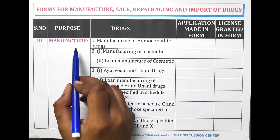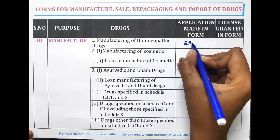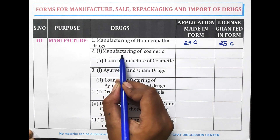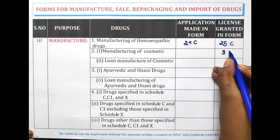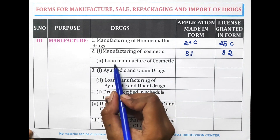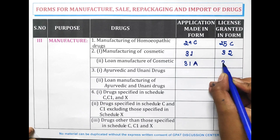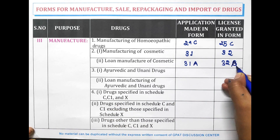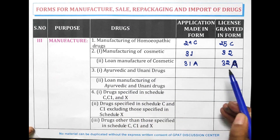For manufacturing, for homeopathic drugs the application is made in Form 24C and the license is granted in Form 25C. For manufacturing of cosmetics, the license is granted in Form 32B and the application is made in Form 31. For loan manufacturing of cosmetics, Form 31A is filled and the license is granted in Form 32A.